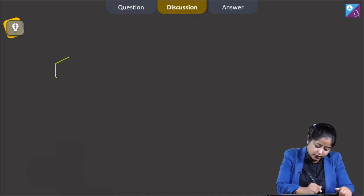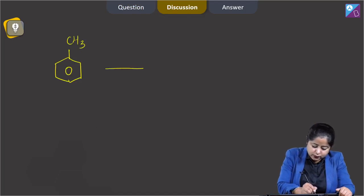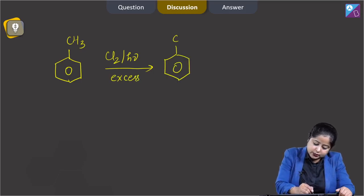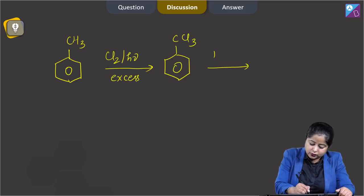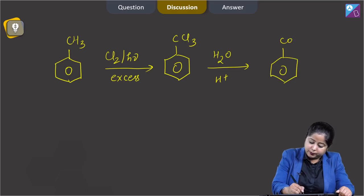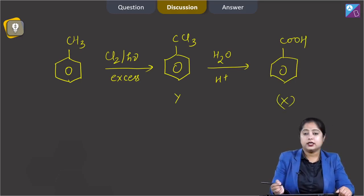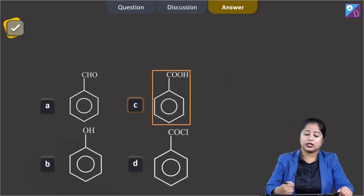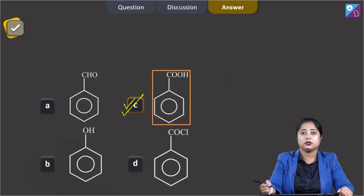Toluene reacts with excess Cl2 in light — chlorination takes place on the side chain to give CCl3 (trichloromethyl benzene, Y), and this on acidic hydrolysis gives benzoic acid, which is X. The correct answer is option C, benzoic acid.